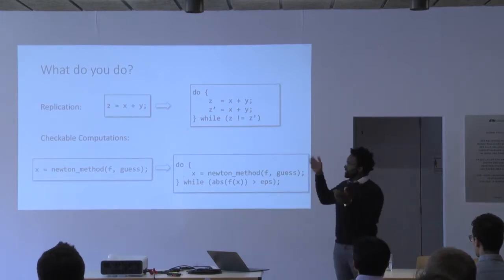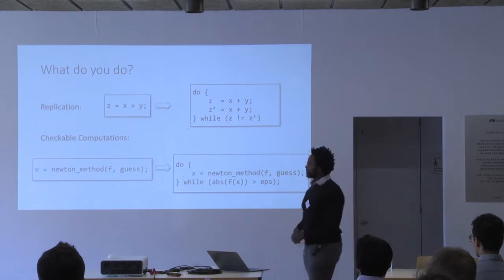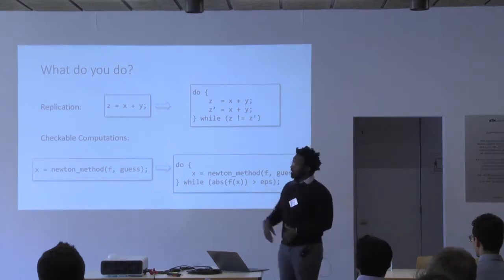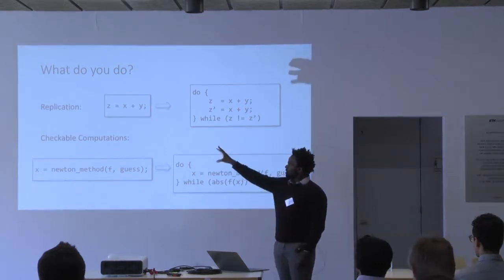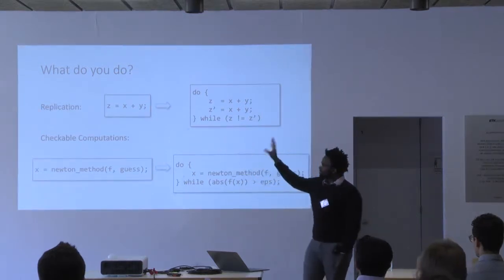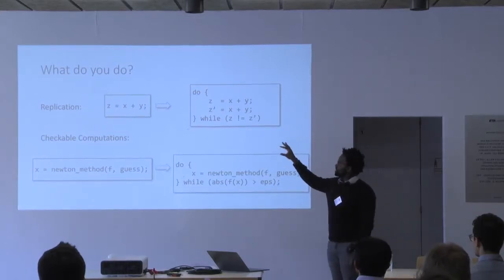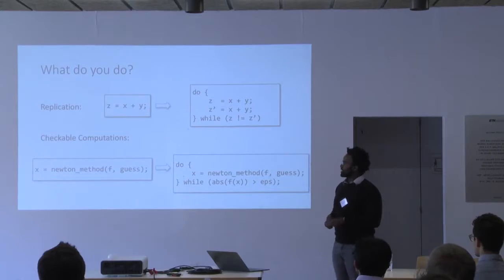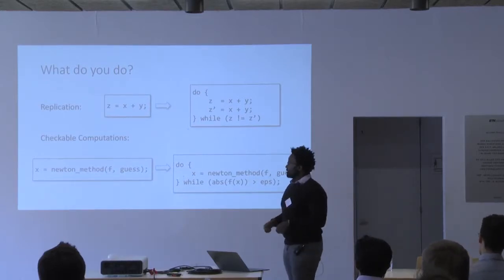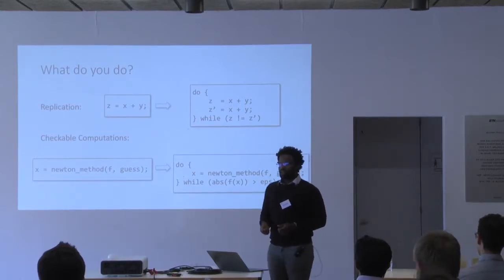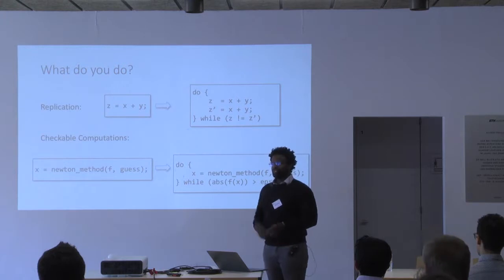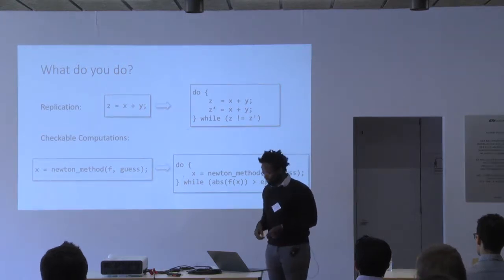There are standard techniques we've thought about for building reliable systems. One is replication: if I have some instruction z = x + y, I'm going to duplicate that implementation and check whether I get the correct result. If I didn't, I loop back around and try again until I get the correct answer.